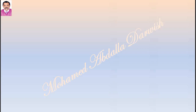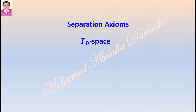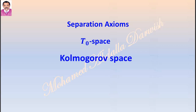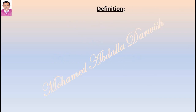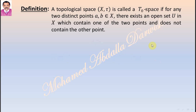Hello, in this video we'll talk about separation axioms. We'll start with T₀ space, also known as Kolmogorov space. A topological space (X, T) is called a T₀ space if for any two distinct points A and B in X, there exists an open set U in X which contains one of the two points and does not contain the other.